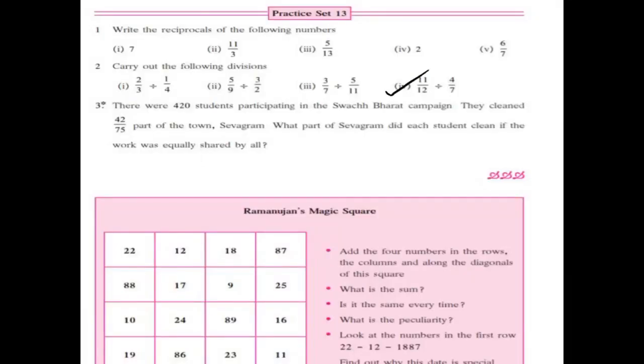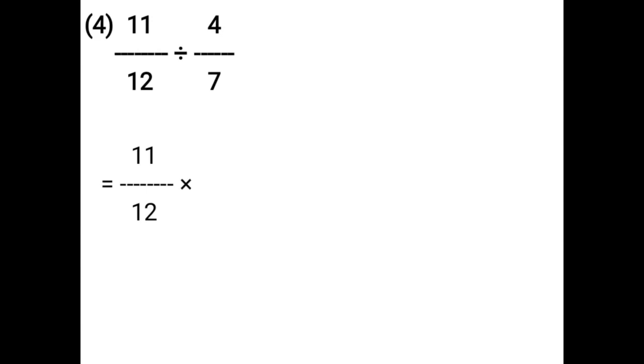11 upon 12 divided by 4 upon 7. That is equal to 11 upon 12. Division changes into multiplication. 4 upon 7 becomes 7 upon 4. That is equal to 77 upon 48.